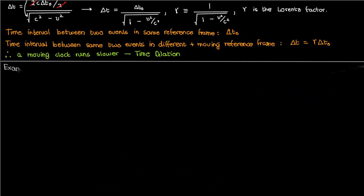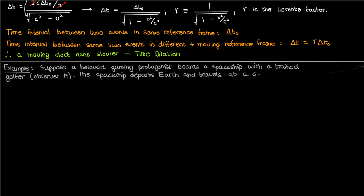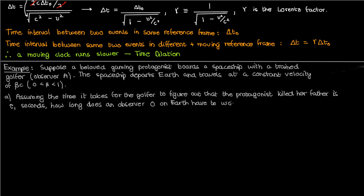Let's solidify our understanding of time dilation with an example problem. Suppose a gaming protagonist boards a spaceship with a trained golfer, observer A. The spaceship departs Earth and travels at a constant velocity of beta*c. Part A asks: assuming the time it takes for the golfer to find out that the protagonist killed her father is tau_1 seconds, how long does an observer O on Earth have to wait before hearing the radio transmission of the protagonist's first screams?